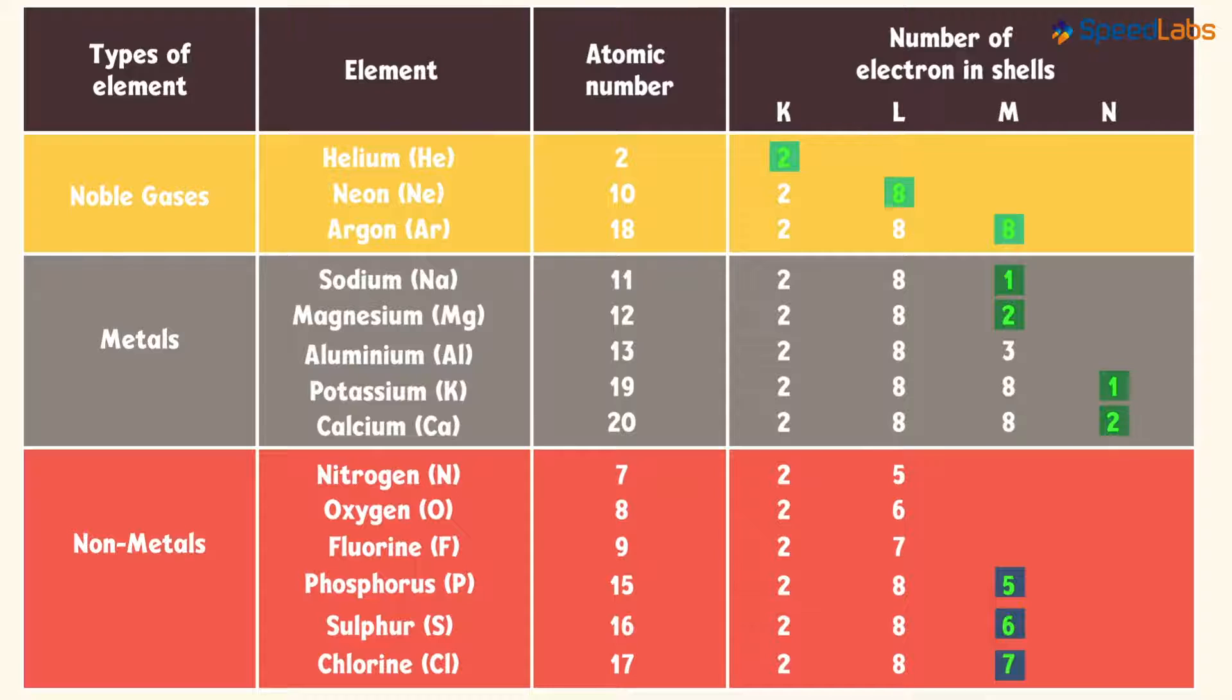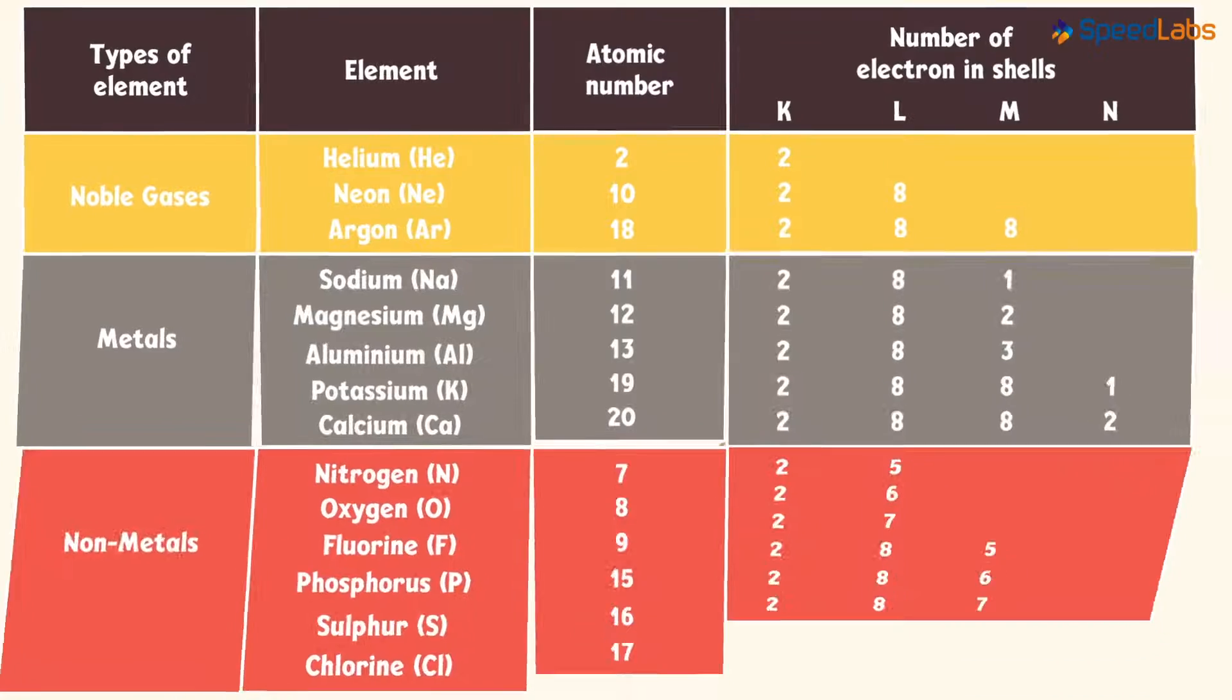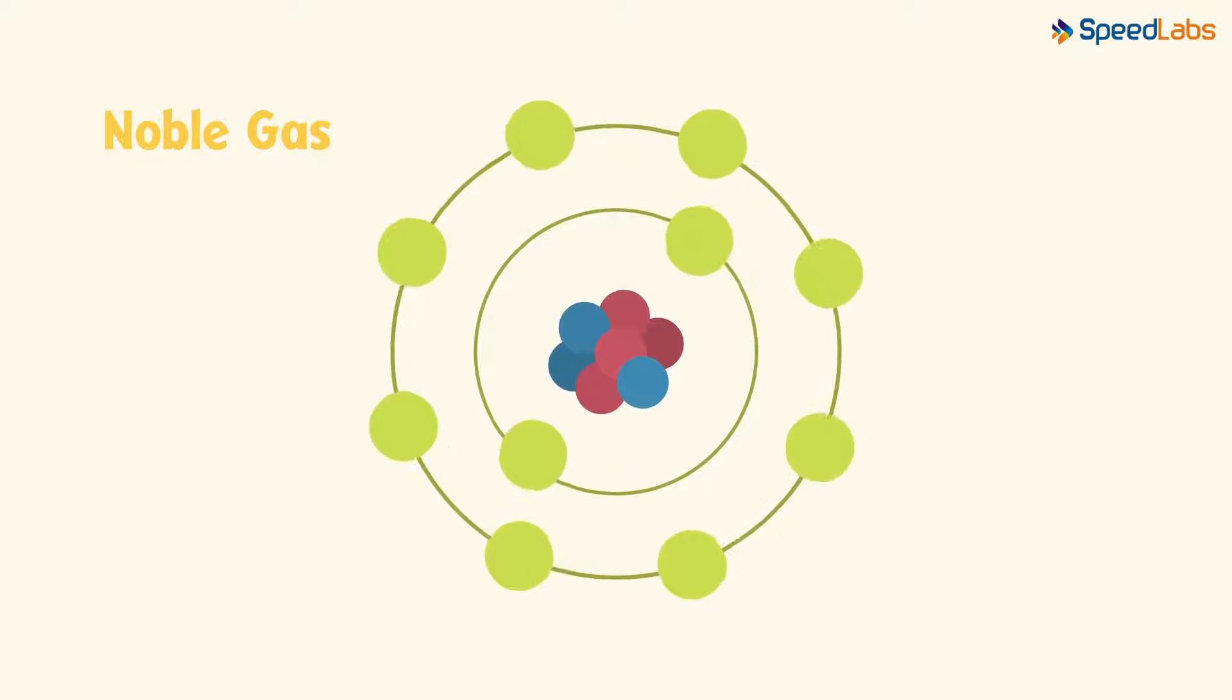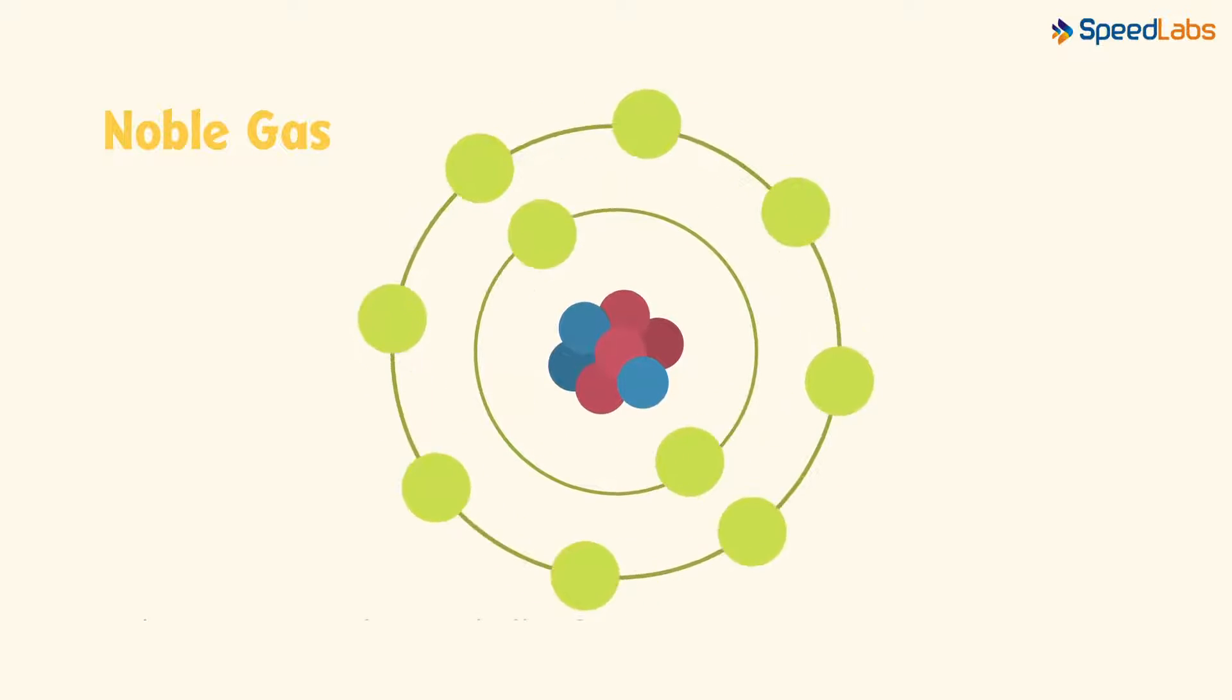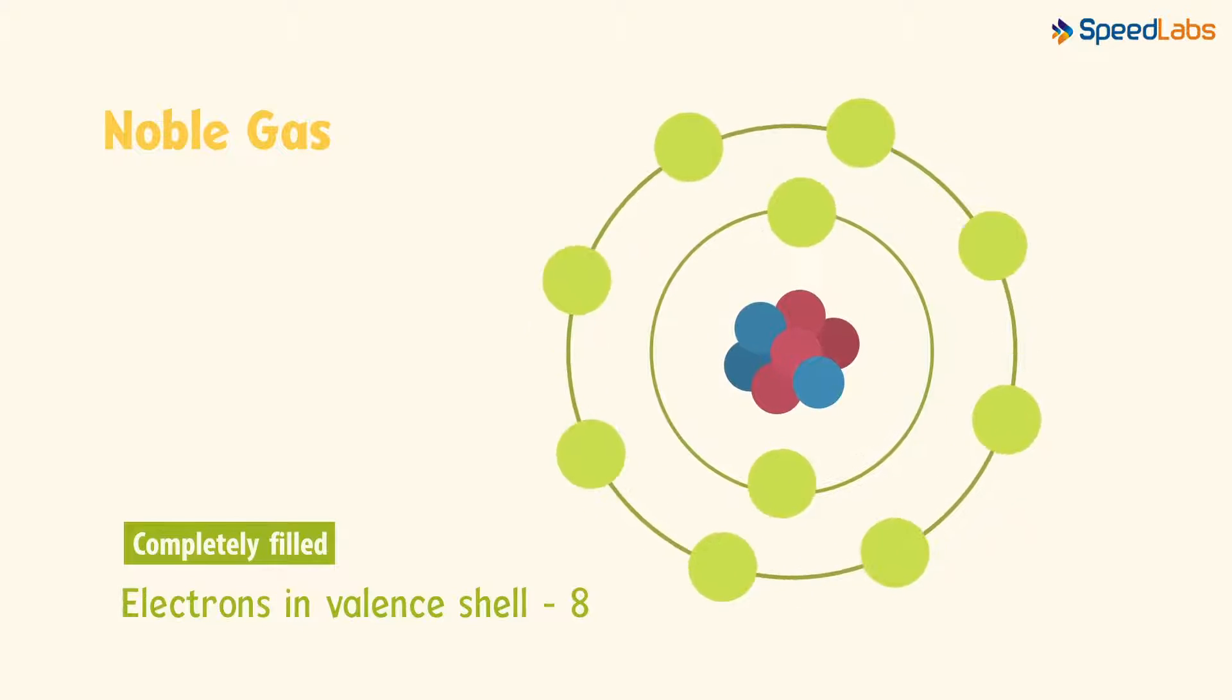If you look at the valence shells of the noble gases, we see that they are completely filled. These elements show very little chemical activity. Every element has a tendency to attain a completely filled valence shell. If the valence shell is already filled, then there's no desire to attain a filled valence shell.